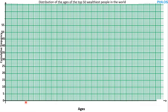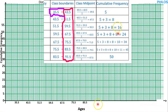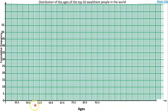For the x-axis, we are going to use the upper class boundary of each class, but we will start from the lower class boundary of the first class. The lower class boundary of the first class is 35.5, so we write that first. Then the upper class boundary of that first class is 43.5. After that, the upper class boundary of the next class is 51.5, then 59.5, then 67.5, then 75.5, then 83.5, and the last one is 91.5. Now we plot the upper class boundaries against the cumulative frequencies.